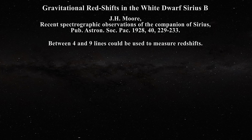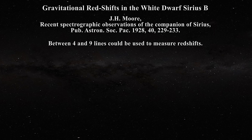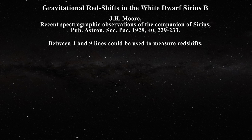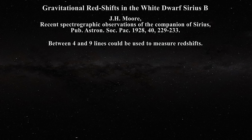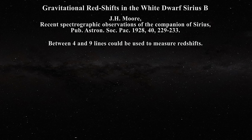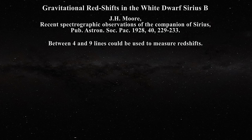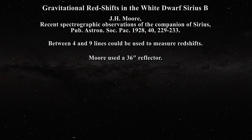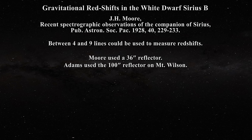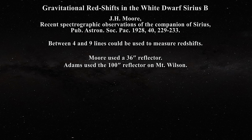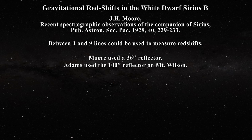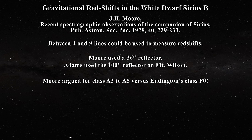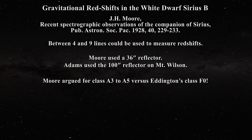Moore claimed that between 4 and 9 separate lines could be used to measure the gravitational redshift of Sirius B. Unfortunately, his sample included lines from Sirius A, since the companion has no metal lines. As a result, most of the lines measured by Moore did not even belong to Sirius B. Moore had only a 36-inch reflector at his disposal, while Adams had used the 100-inch reflector on Mount Wilson. Nonetheless, Moore did correct Eddington's idea that Sirius B was an F0 class star and argued for much higher temperatures, somewhere between A3 and A5.